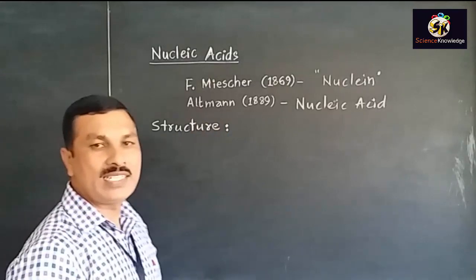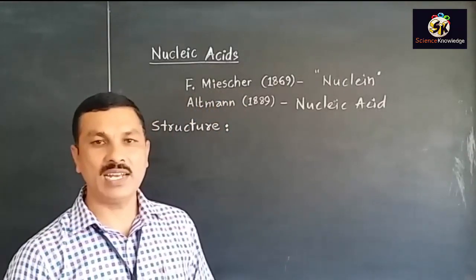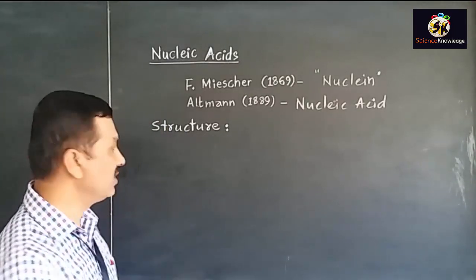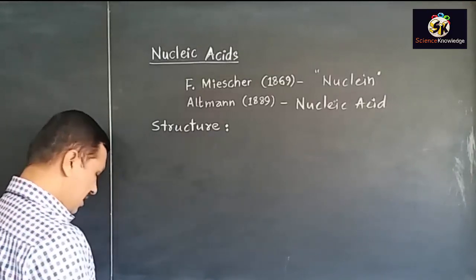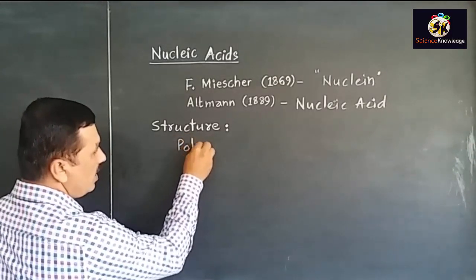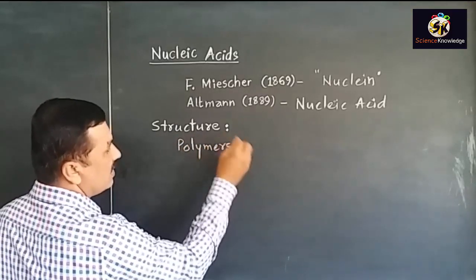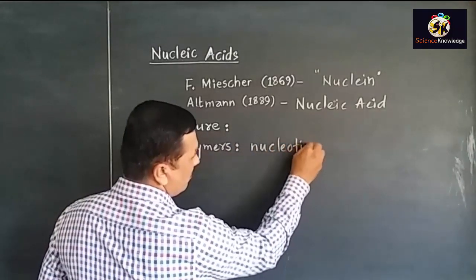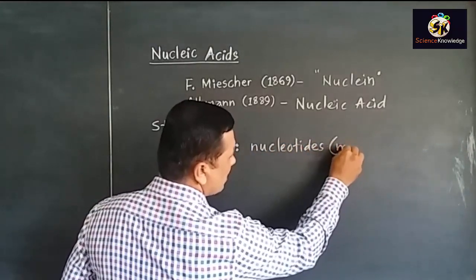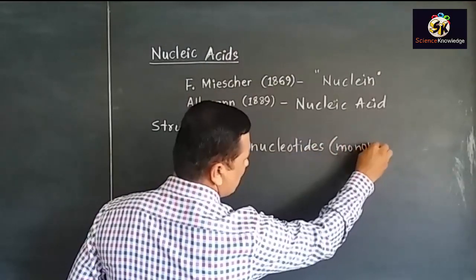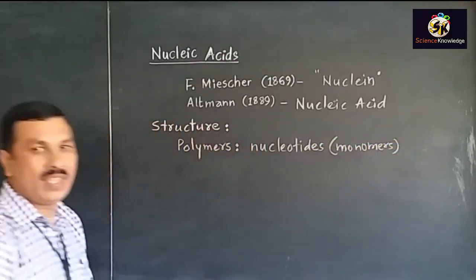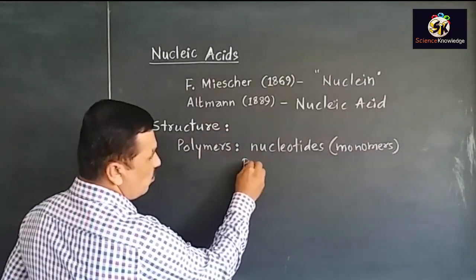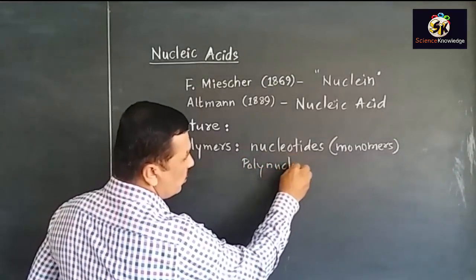Structurally, Nucleic Acids are polymers, and these polymers are made up of many monomers — that is, the building blocks — which are linked with each other. Therefore, Nucleic Acids are polymers and they are made up of Nucleotides. So Nucleotides are the monomers, and as these are polymers of Nucleotides, they are also named as polynucleotides.